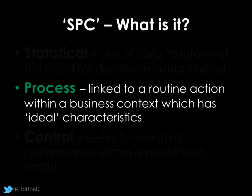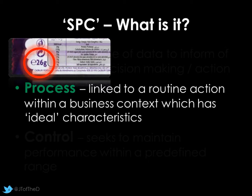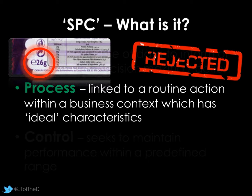SPC looks at processes — particular routines, discrete tasks in a business that we can measure to see how they're going. For example, on chocolate bars, the E-mark is actually to do with statistical process control — the weight of a chocolate bar has to fit within certain remits, such as 26 grams. We could also look at rejected products and defect levels, whether we're moving outside acceptable boundaries, perhaps a target of 2% or 3% rejects.